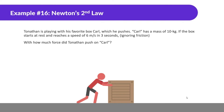Tonathan is playing with his favorite box, Carl, which he pushes. Carl has a mass of 10 kilograms. If the box starts at rest and reaches a speed of 6 meters per second in 3 seconds — ignoring friction — how much force did Tonathan push on Carl? We're looking for the applied force.